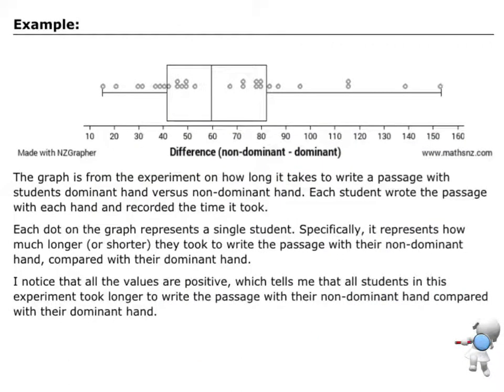Let's have a look at an example now. So this is a dot plot of the difference. And notice how in brackets I've been quite explicit. It's the non-dominant hand minus the dominant hand.